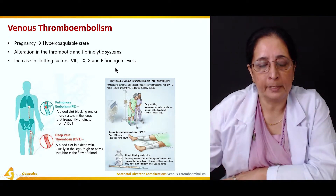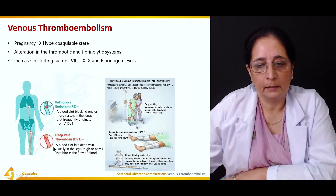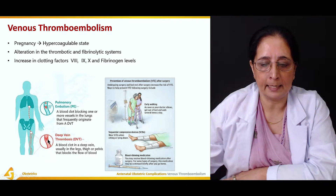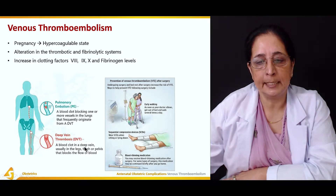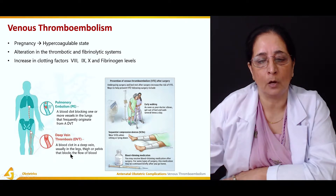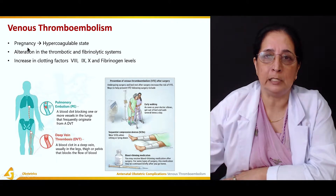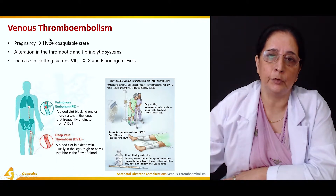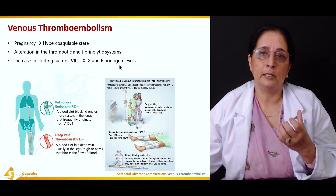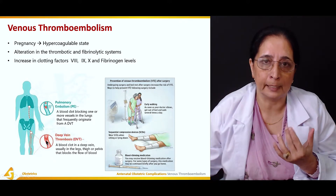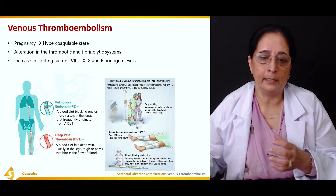This diagram shows deep vein thrombosis, which is common in the legs. A blood clot in the deep veins of the legs, thigh, or pelvis blocks the flow of blood. As a result of all these factors during pregnancy, blood clots form in the deep veins of the legs.